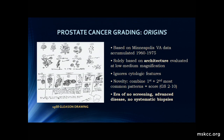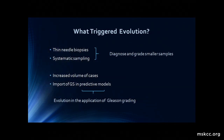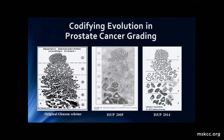This was in an era of no screening. Most patients presented with advanced disease and there were no systematic biopsies. What triggered the evolution? Well, obviously there was the advent of thin-needle biopsies, systematic sampling that rapidly went from 2 to 6 to 12 and maybe more. Pathologists were called upon to diagnose and grade smaller samples and an increasing volume of cases. And importantly, beginning in the late 90s, the import of the Gleason score in almost every predictive model for prostate cancer caused evolution in the application of Gleason grading.